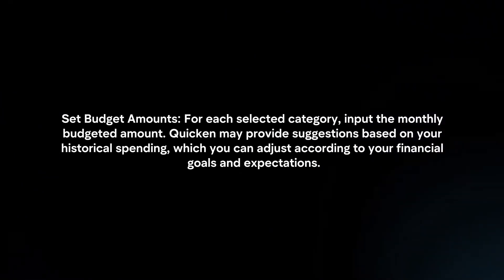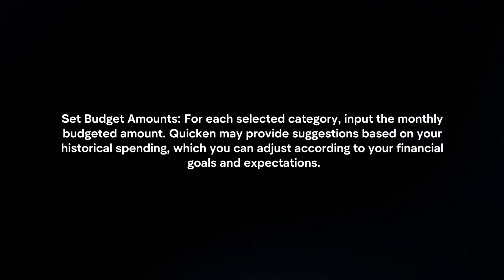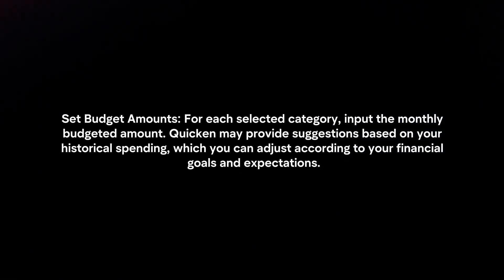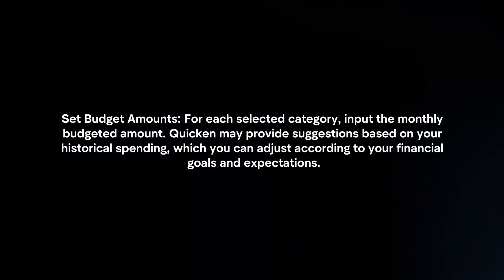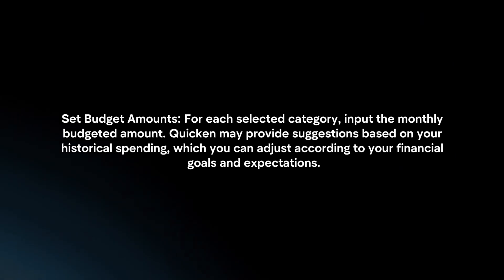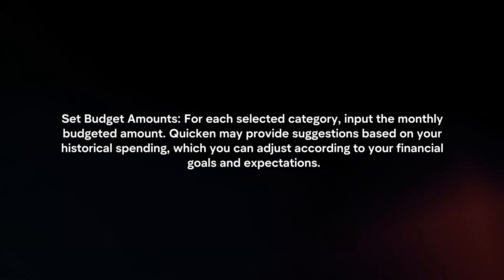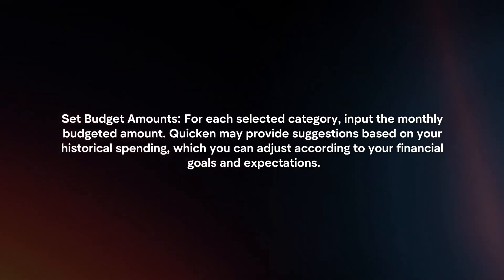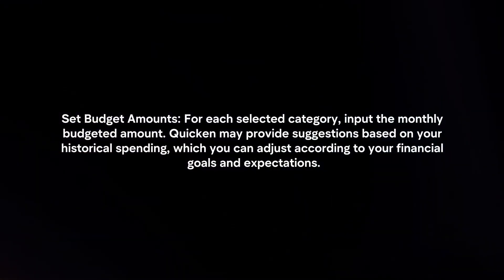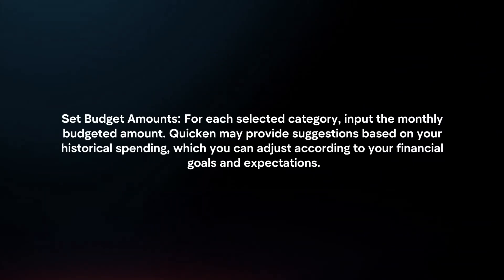Set budget amounts. For each selected category, input the monthly budgeted amount. Quicken may provide suggestions based on your historical spending, which you can adjust according to your financial goals and expectations.